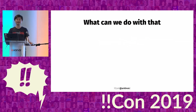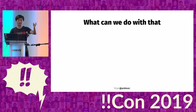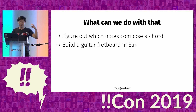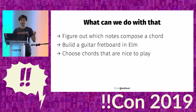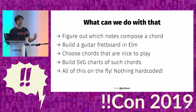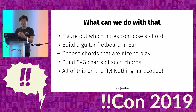The difference is that the code now really knows the chords — knows what A minor is, what B is. It's not just a string anymore. It's the same thing that happens when your programming language's compiler transforms your text file into stuff that runs on your computer. So once we have that, we can figure out which notes compose a chord like A minor, we can build a guitar representation in Elm, we can choose chords which are nice to play so I don't have to squeeze my hands in weird ways, and we can build SVG charts of such chords — all of this on the fly, nothing hard-coded. In a way, you can think of it as the computer knowing better than me how to play those chords on a guitar.